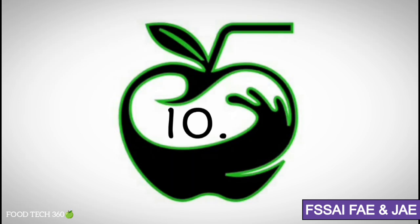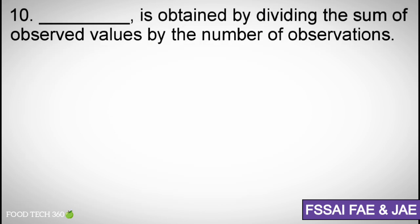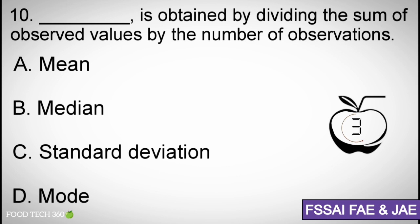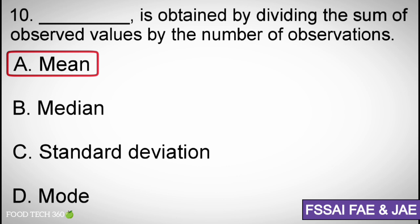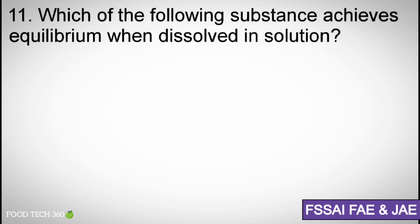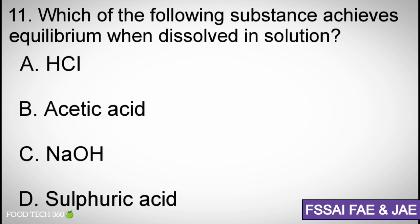Question number ten: Blank is obtained by dividing the sum of observed values by the number of observations. Options: (a) mean, (b) median, (c) standard deviation, (d) mode. Correct answer: (a) mean.